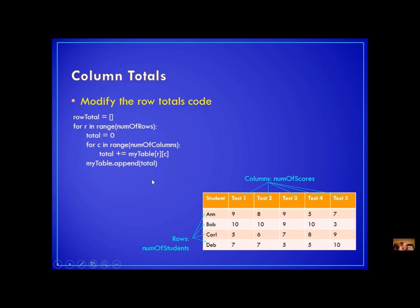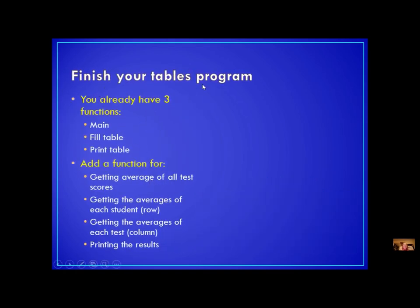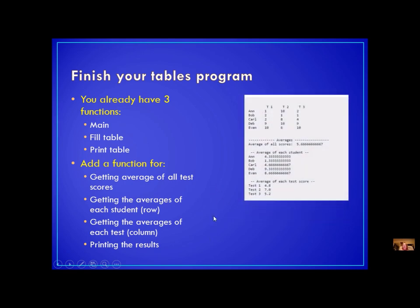To finish your tables program, you already have three functions from the last lecture: main, fill table, and print table. You might have started getting the average already. This is what you need to add: a function that gets the average of all test scores, a function that gets the averages of just the rows, and a function that gets the averages of just the columns — so average for each student and average for each test. You also need a function that prints these results. You don't have to change anything you already have; you're just adding to it.